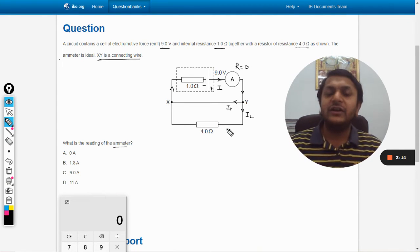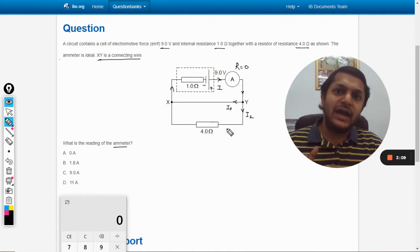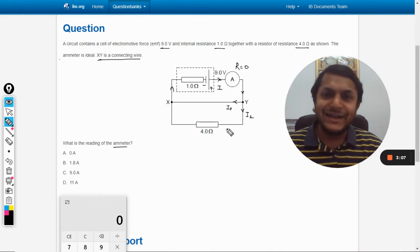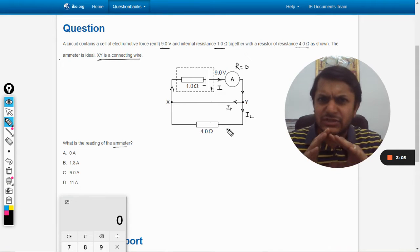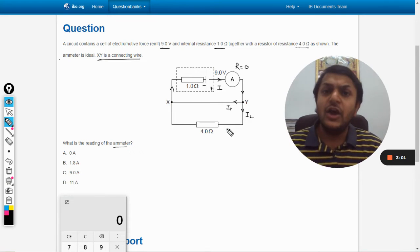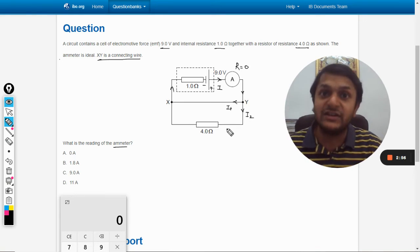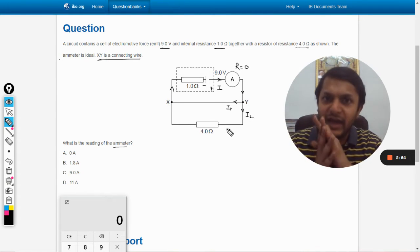So total current will move from Y to X. Now as a hint I can tell you, just remember that if there is a wire which does not have any resistance, all the complete current will pass through that wire and the other wire which is having a resistor will not have any current in it.